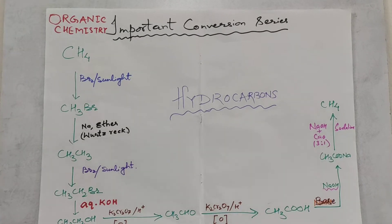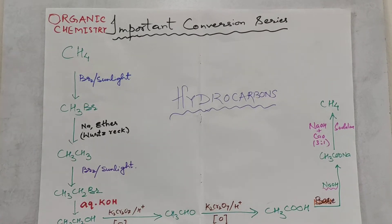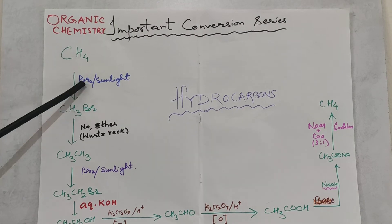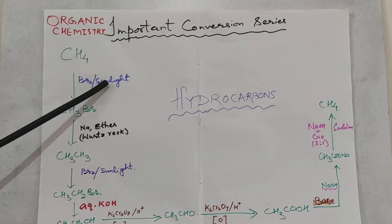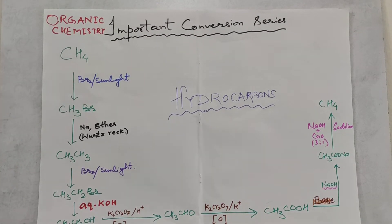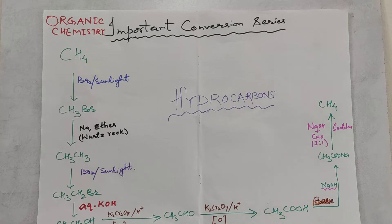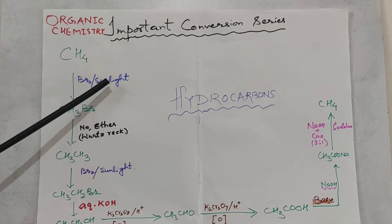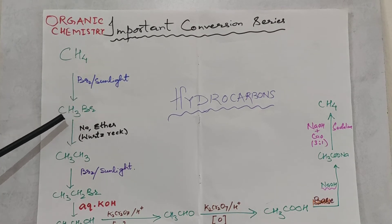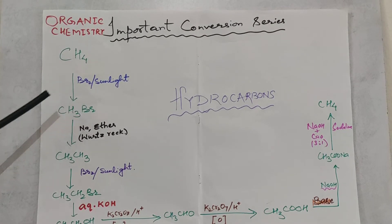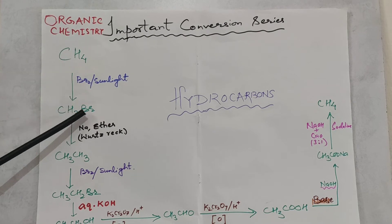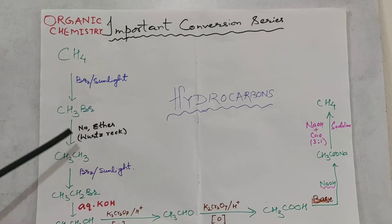First is methane. Methane reacts with bromine in the presence of sunlight via a free radical substitution reaction to form bromomethane (CH₃Br), also called methyl bromide.